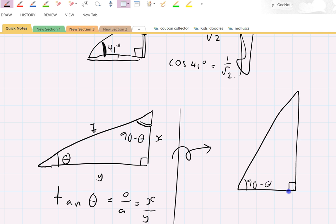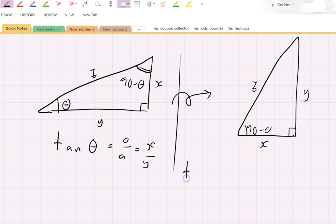This is 90 minus theta. There's my right angle. This y here is this y here, that z is still that z there, and that x is that x there. So we know that tan of 90 minus theta equals opposite over adjacent, which is y over x.